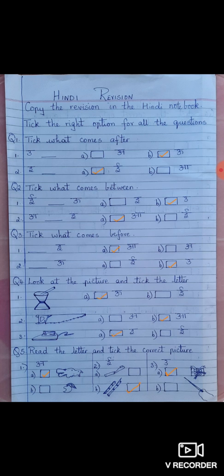Question 2. Tick what comes after E, E, dash U. What comes in between is U. Option B. So you will tick option B.